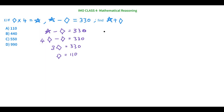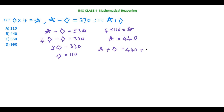Now let's substitute back into the first equation. Diamond is 110, so 4 times 110 equals star, which gives star equals 440. Now we know diamond equals 110 and star equals 440. So star plus diamond equals 440 plus 110, which is 550. Our answer is 550.